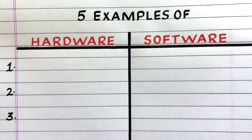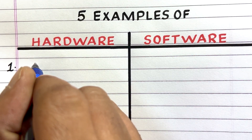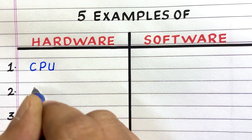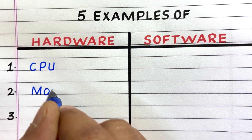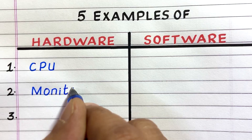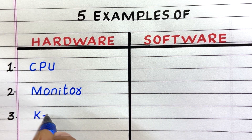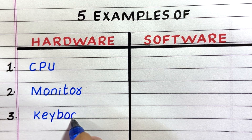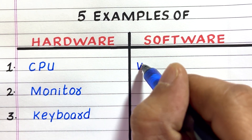The first example of hardware is the Central Processing Unit, CPU. The second is a monitor. The third is a keyboard.